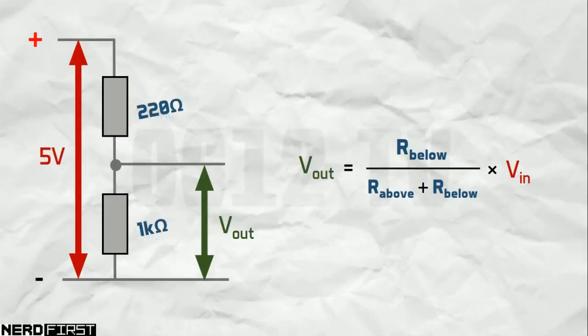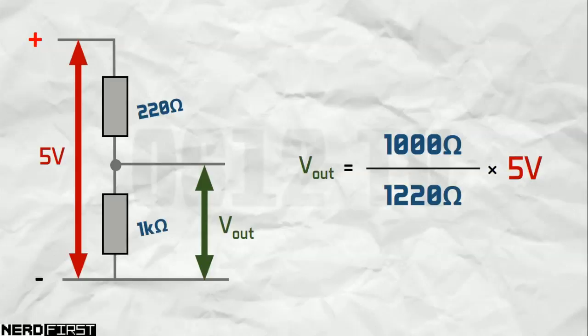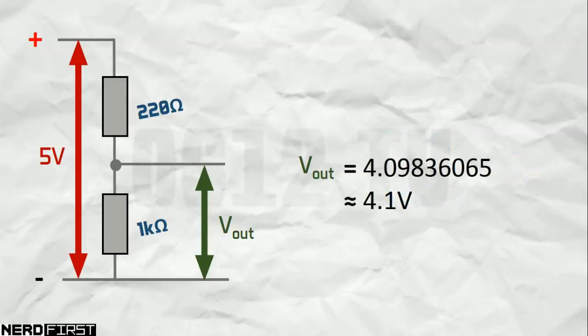Applying this formula to the circuit we've just created, we can see how easy it is to derive the final voltage. By calculating the ratio and substituting our input voltage into the equation, we can very easily get at the answer of 4.1V.